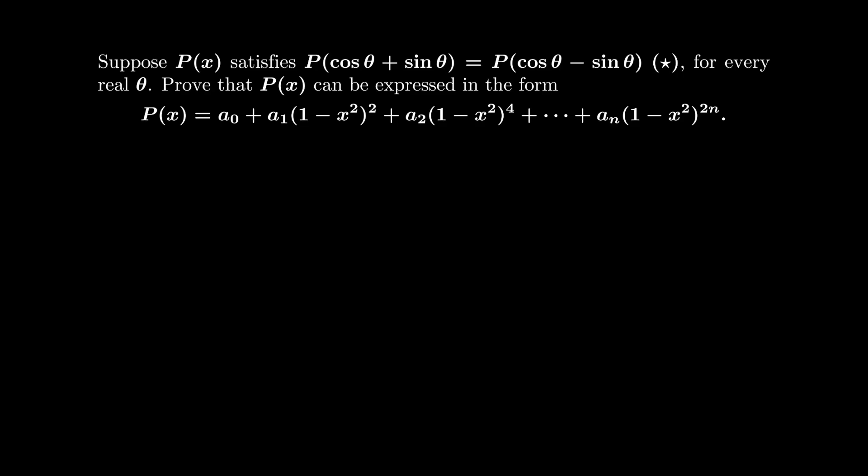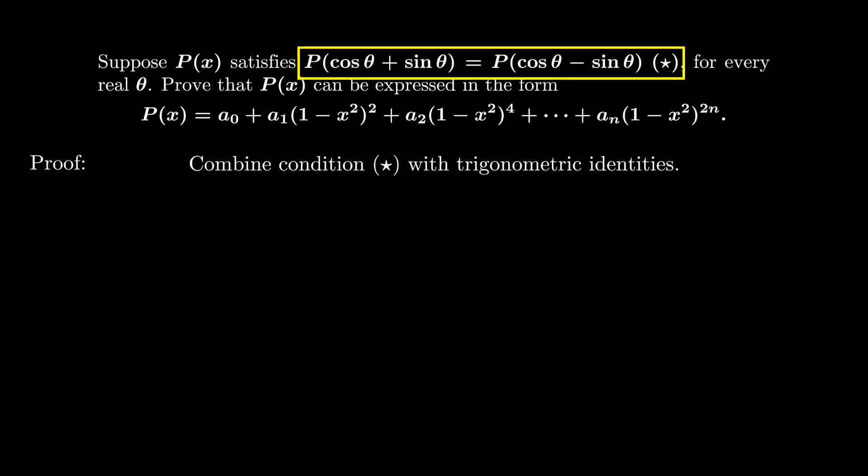Let's see how we handle the problem. A natural idea is to combine condition (★) with some trigonometric identities. The first thing I try is to replace θ with -θ, but unfortunately this gets back to the same equation.